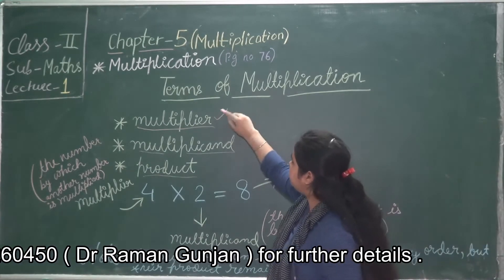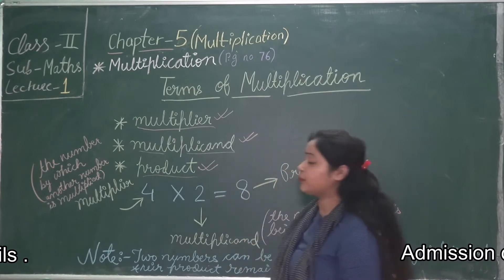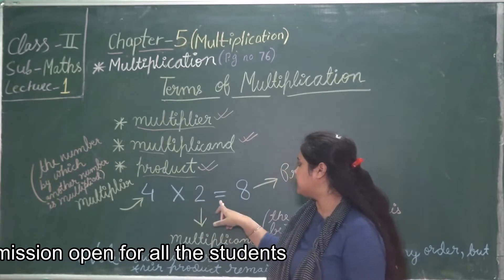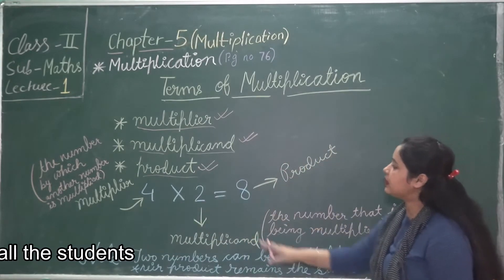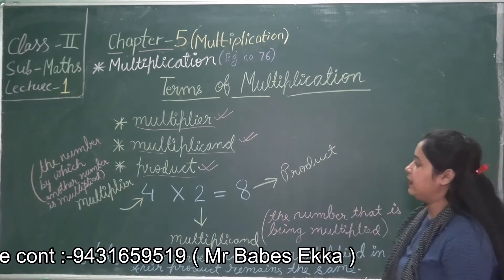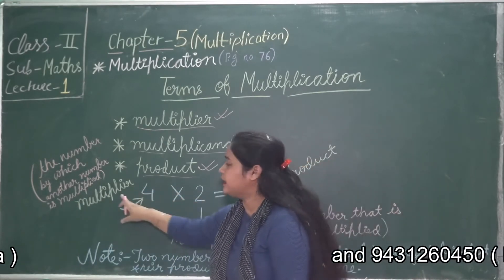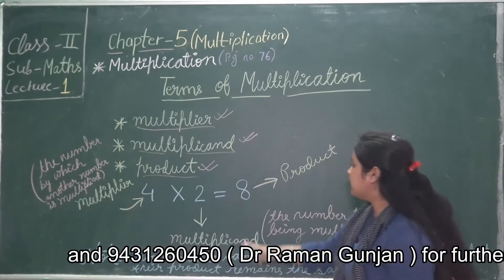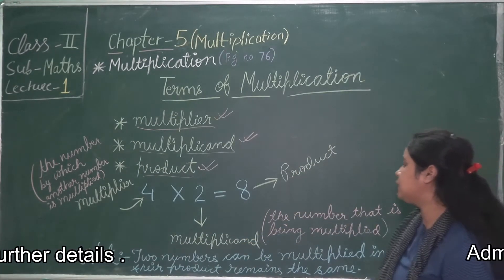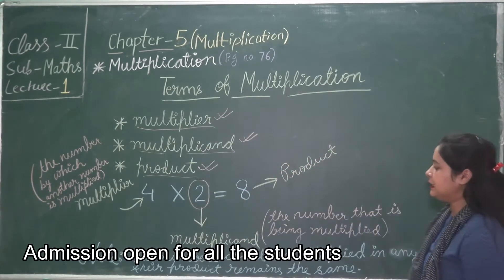We should know which numbers are called multiplier, which are called multiplicand, and which are called product. For example, 4 multiplied by 2 is equal to 8. The number by which another number is multiplied is called the multiplier — so 4 is the multiplier here. The number that is being multiplied is called the multiplicand — so 2 is the multiplicand.